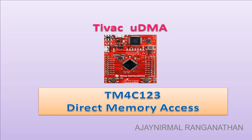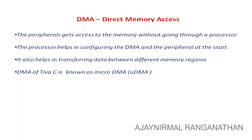Hi everyone, this is Ajay again with another video. In this video we are going to discuss DMA on TivaC micro DMA. DMA is Direct Memory Access — a peripheral can access memory without going through the processor. The processor is only used when there is a DMA request; otherwise it may be in a sleep state or doing some other work. The processor helps in configuring the DMA and the peripheral at the start.